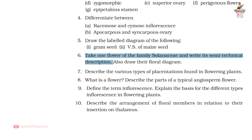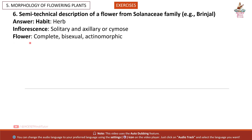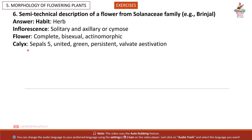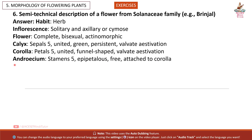Question 6: Take one flower of the family Solanaceae and write its semi-technical description. Also draw their floral diagram. Answer: Semi-technical description of a flower from Solanaceae family. Example: Brinjal. Habit: herb. Inflorescence: solitary and axillary or cymose. Flower: complete, bisexual, actinomorphic. Calyx: sepals 5, united, green, persistent, valvate aestivation. Corolla: petals 5, united, funnel-shaped, valvate aestivation.